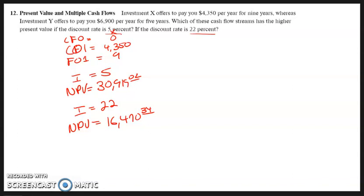So now we'll do the second part. For Y, CF0 is going to be 0, C01 is 6,900, F01 is 5.